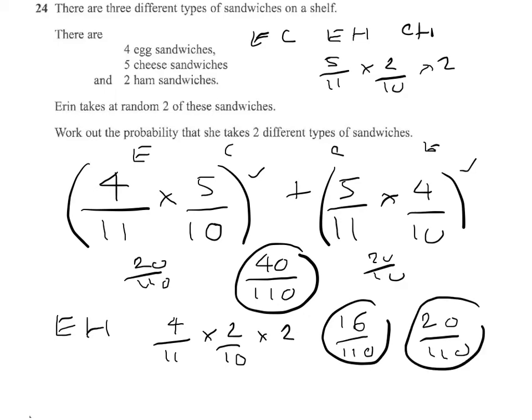So we've got forty, twenty and sixteen, which gives me seventy-six. So the full answer then will be seventy-six out of a hundred and ten.